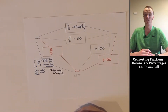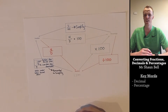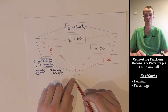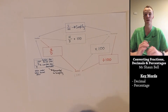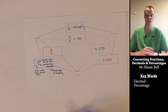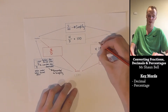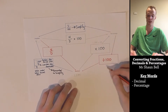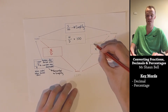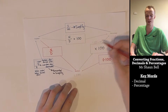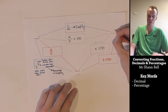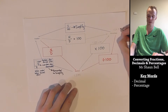Now I've given you an overview of how to convert these, let's try a trickier problem. I've been given the decimal 1.375 and been asked to convert it. Let's begin by converting it to a percentage by multiplying 1.375 by 100. We move the decimal place two spots to the right, so our final answer will be 137.5%.